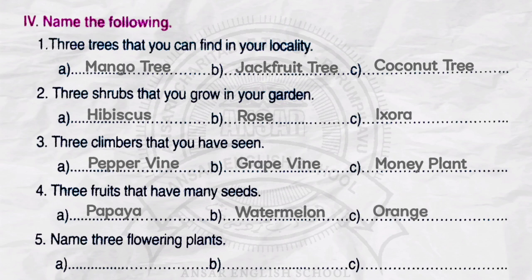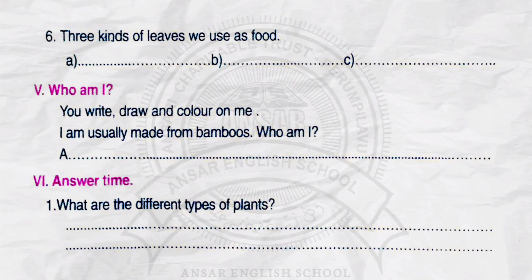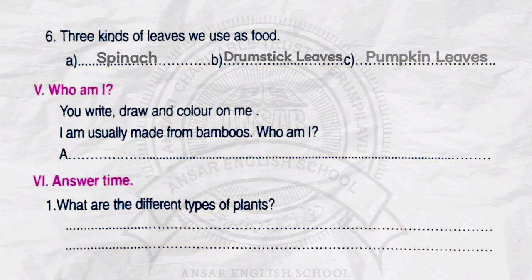Number 5. Name three flowering plants. A. Jasmine. B. Marigold. C. Sunflower. Number 6. Three kinds of leaves we use as food. A. Spinach. B. Drumstick leaves. C. Pumpkin leaves.